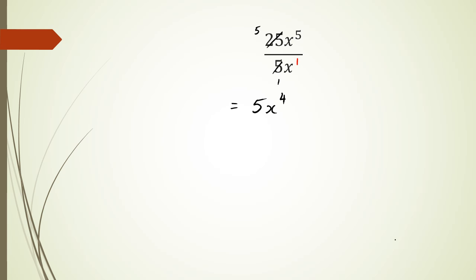If you want to see this done the long method, watch this: 25 can be written as 5 times 5, and then x to the power of 5 could be written as five x's, and then in the denominator I have 5 multiplied by 1x.